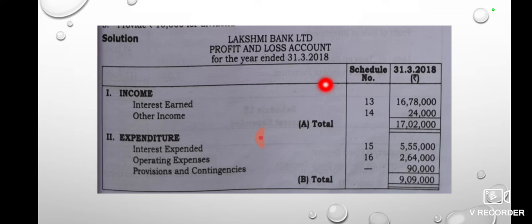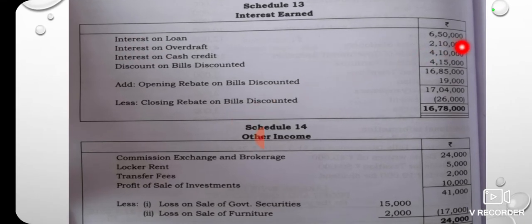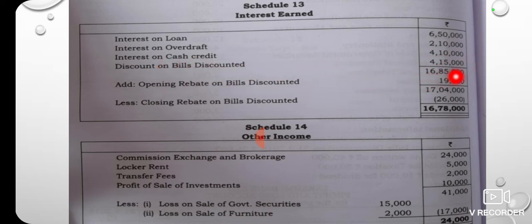Profit and Loss Account for the year ended 31st March. It has a particular schedule number and an amount column. The income side includes interest. The interest is Schedule 4. Discounted Bills Discounted is also Schedule 4.